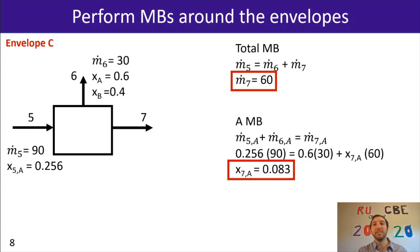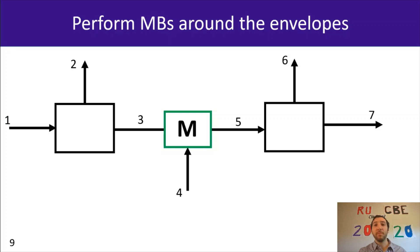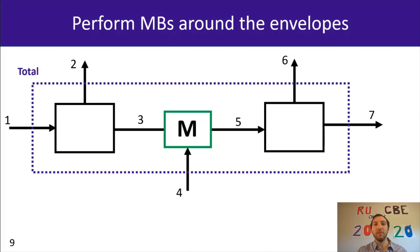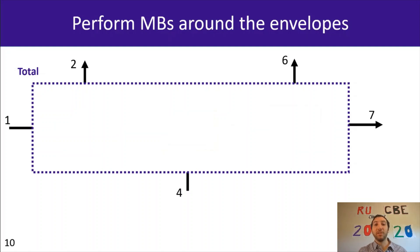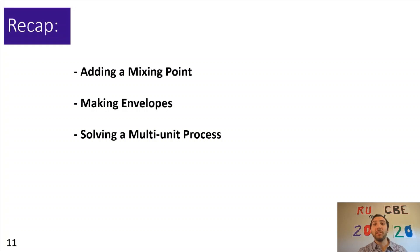I also mentioned that you can do a total material balance on your system. Returning to our diagram with all unit processes, the total material balance envelope surrounds all units, and you only focus on streams entering and exiting the entire system. In this example, that means streams one and four entering, and streams two, six, and seven exiting. All the internal unit processes get eliminated, which can be very handy. To recap, we talked about adding a mixing point, making envelopes, and how to approach solving a multi-unit process.